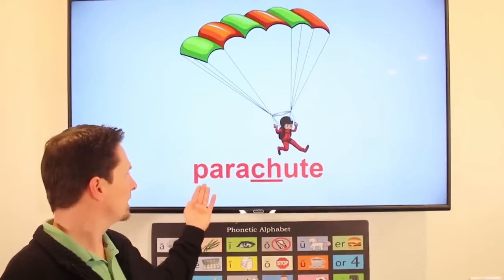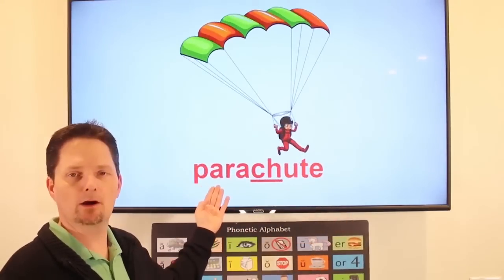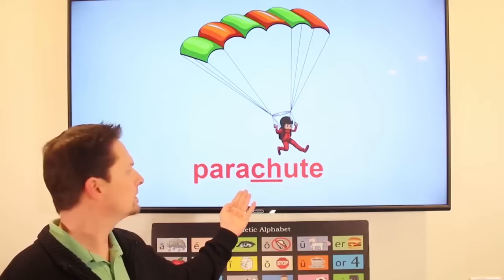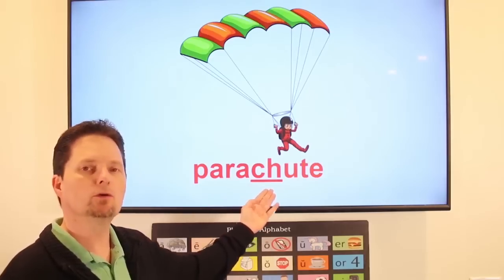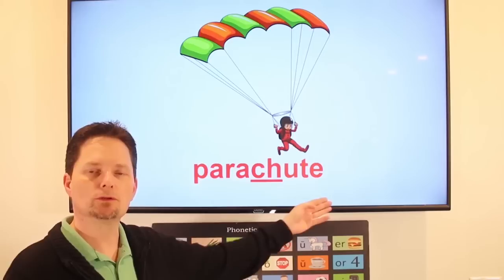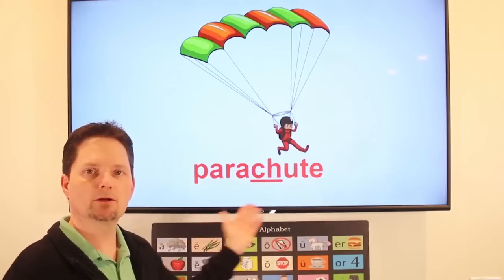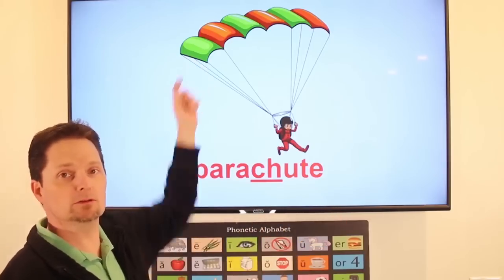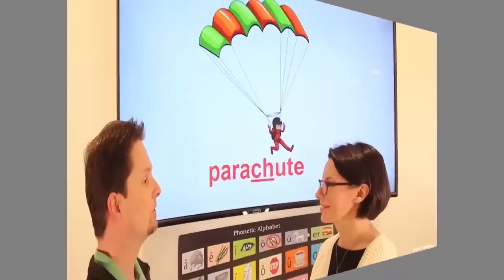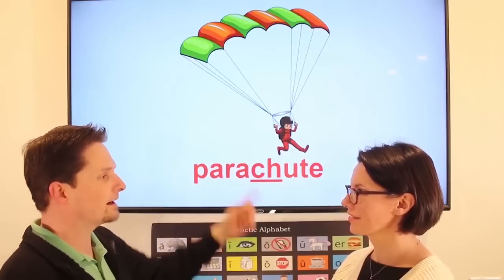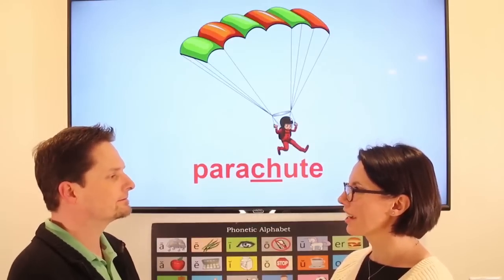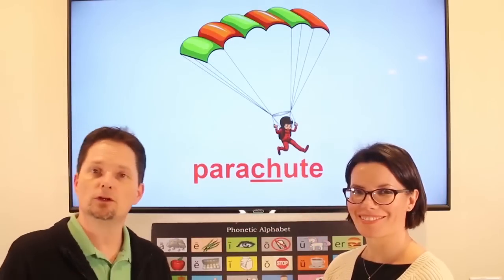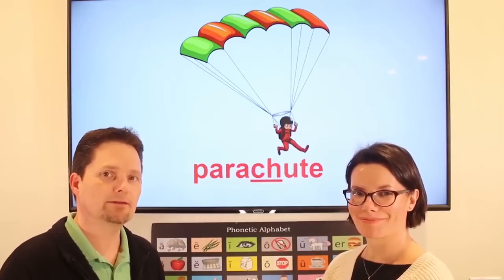Pronunciation: parachute. Pronounce this with the 'air' sound — pair — a — para. Soft sound: shh. Shoot. Parachute. You need a parachute to go skydiving. Do you need a parachute to go skydiving? Yes, I need a parachute to go skydiving.